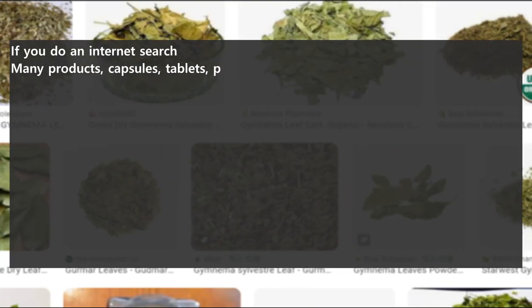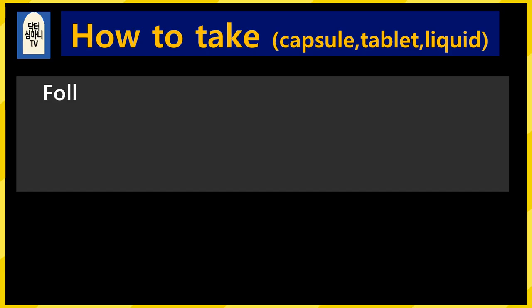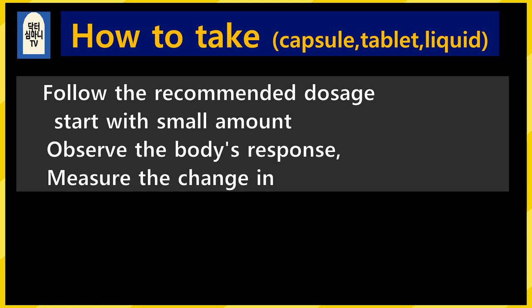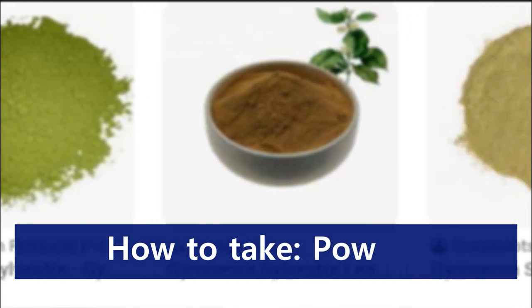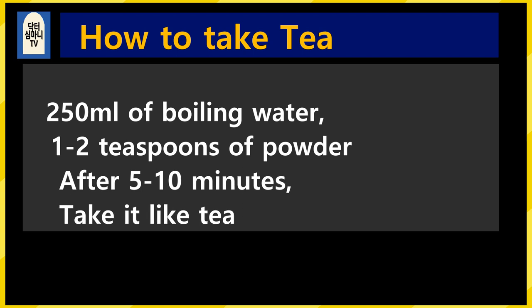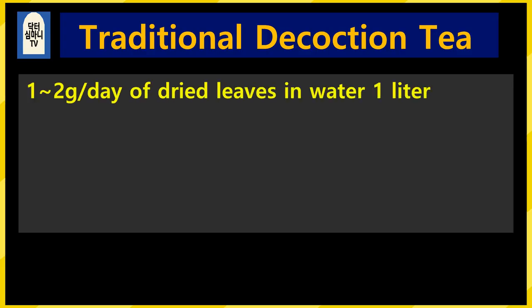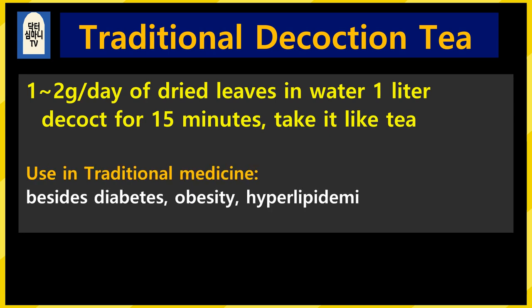There are many products on the internet. Choose tablets or capsules made from leaf extract. Start with the lowest recommended dose and adjust slowly while observing changes. For tea, choose a powder product — to 250cc of boiling water, add 1 to 2 teaspoons of powder, wait 5 to 10 minutes, and drink like tea. You can add lemon juice and cinnamon. In traditional medicine, 1 to 2 grams of dried leaves in 1 liter of water, boiled for 15 minutes. The main traditional use of Gymnema is diabetes, obesity, and hyperlipidemia — and this traditional experience is proven in modern medicine.